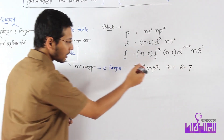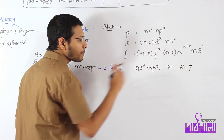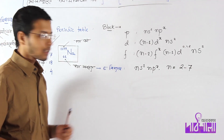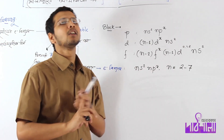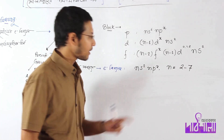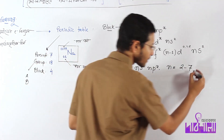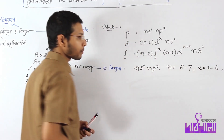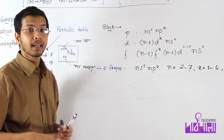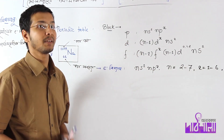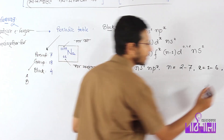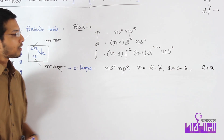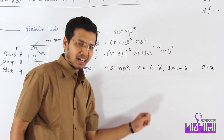The p orbital has 3 orbitals: px, py, and pz. So the total electrons are 6, meaning the x value is 1 to 6. The question is: what is the group number? The group number equals 2 plus x, where x goes from 1 to 6, giving group numbers 1 to 6.